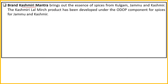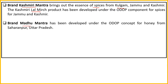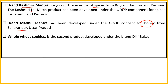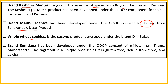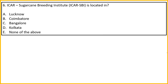Brand Kashmiri Mantra is basically spices - especially promoting Kashmiri red chilli (lal mirch) from the Kulgam area of Jammu and Kashmir. Brand Madhu Mantra is a honey product from Saharanpur, Uttar Pradesh. There are also whole wheat cookies - Delhi Bakes cookies developed by a company called Delhi Bakes. Brand Somdana has been developed under the ODOP concept with millets - which are considered gluten-free and rich in iron, fiber, and calcium.